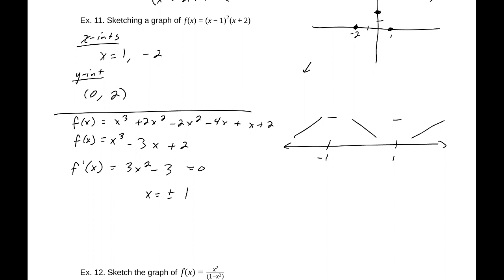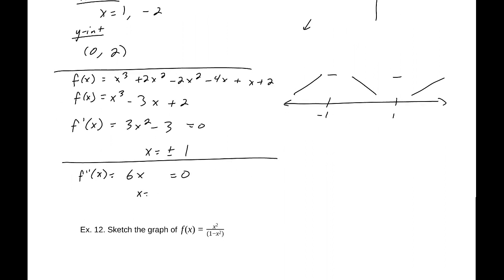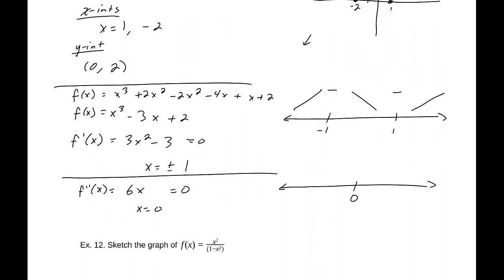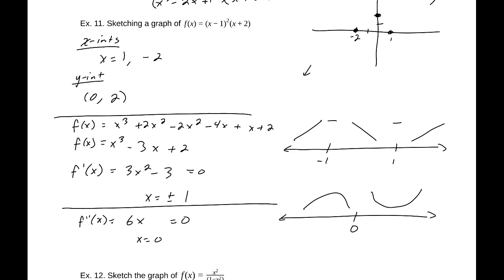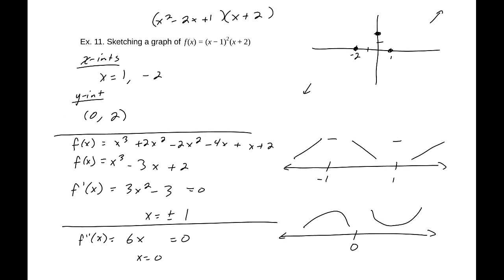Now for the second derivative: f''(x) = 6x. We have a potential inflection point at x = 0. Testing at x = 1 gives concave up; testing at x = -1 gives concave down. So there is a concavity change at x = 0.